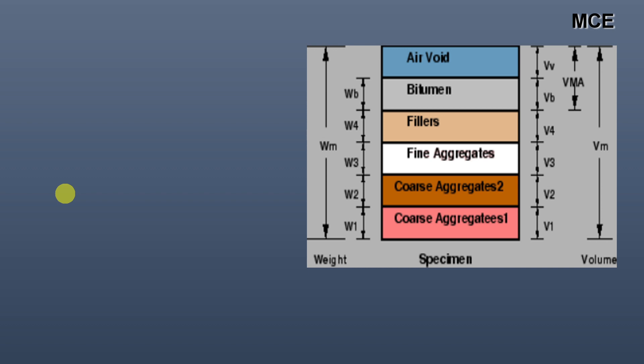If I see first the phase diagram of the question, you can see this is the phase diagram in which the first is at the bottom coarse aggregate, its weight is W1 and volume is V1. Then we have coarse aggregate 2, after that we have fine aggregates, fillers, bitumen and air voids.